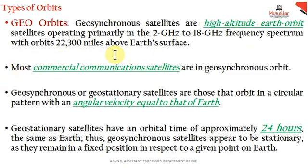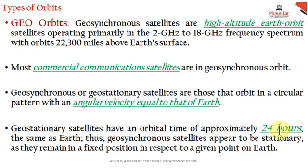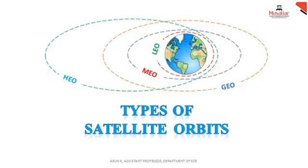Geosynchronous satellites in GEO orbit share the same angular velocity as the earth, completing one orbit every 24 hours, remaining over one constant position. To summarize, we have medium earth orbit, low earth orbit, and geosynchronous high-altitude earth orbits.